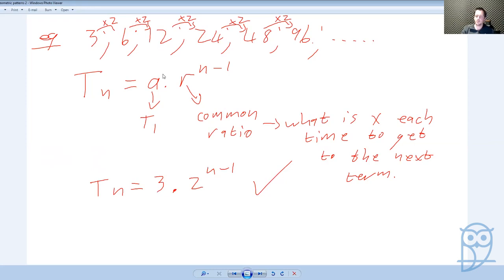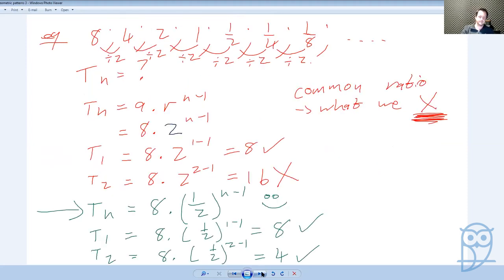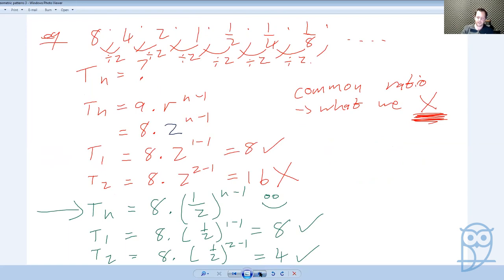In case you are struggling with that, you can literally just take the term divided by the previous term. 6 divided by 3 is 2, 12 divided by 6 is 2, 24 divided by 12 is 2. And it doesn't matter if my ratio is a fraction, it doesn't matter if my ratio is positive or negative, you can still work these things out.